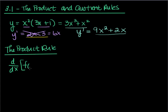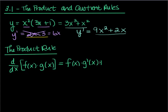This is what we do to take the derivative of two things that are being multiplied together — two functions. Here's the rule: you leave the first, multiply it by the derivative of the second, and then switch that. You want to leave one, take the derivative of the other, then leave the other and take the derivative of the one. I usually think of this as the first times the derivative of the second, plus the second times the derivative of the first. That's what the product rule is.